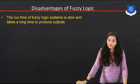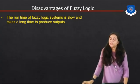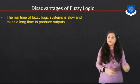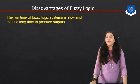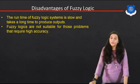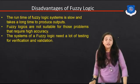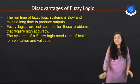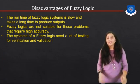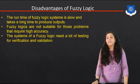The disadvantages of fuzzy logic: the runtime of a fuzzy logic system is slow, and it takes a long time to produce output, because whatever input is given must go through the fuzzification process and then the de-fuzzification process. Compared to other systems, fuzzy logic is not suitable for problems requiring very high accuracy. Also, a fuzzy logic system needs a lot of testing for verification and validation, since we have to find the value between the true and false condition.